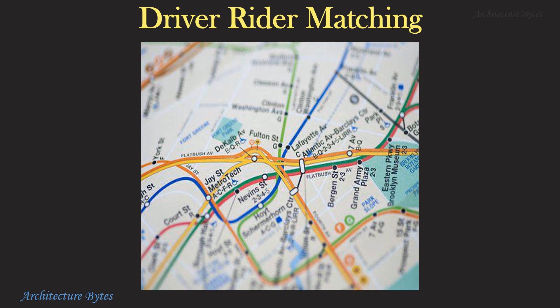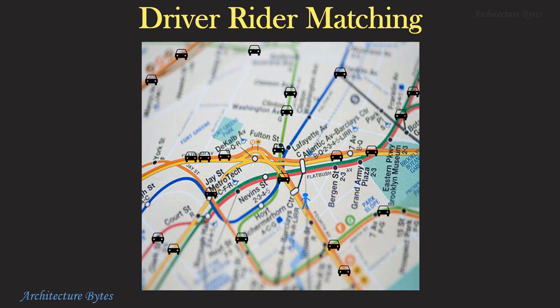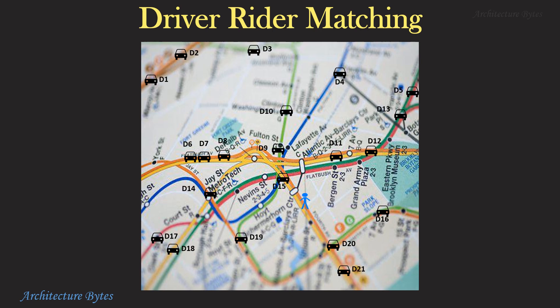Here's a map of a city. The Uber driver app sends its location coordinates every few seconds to Uber servers, so it knows where each driver is on the map. Every driver is uniquely identified in the system with a driver ID. When a potential rider requests for a ride, it sends its location coordinates to the Uber servers.